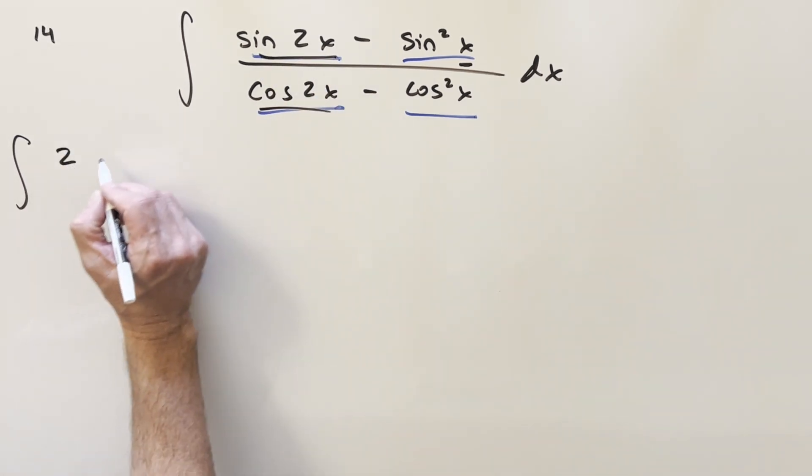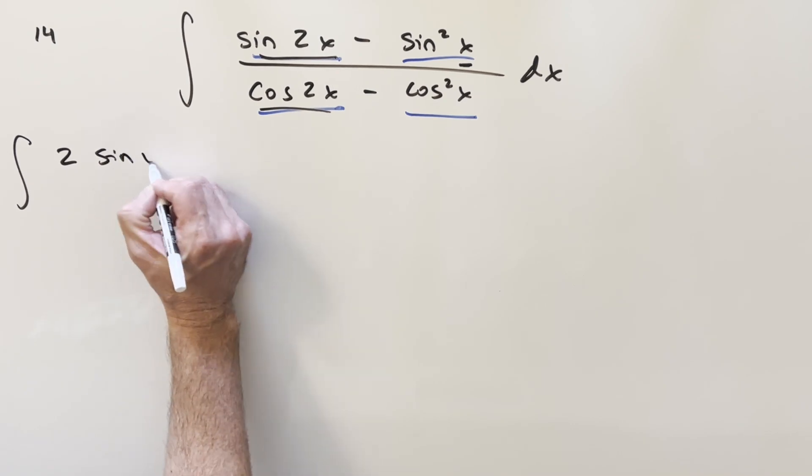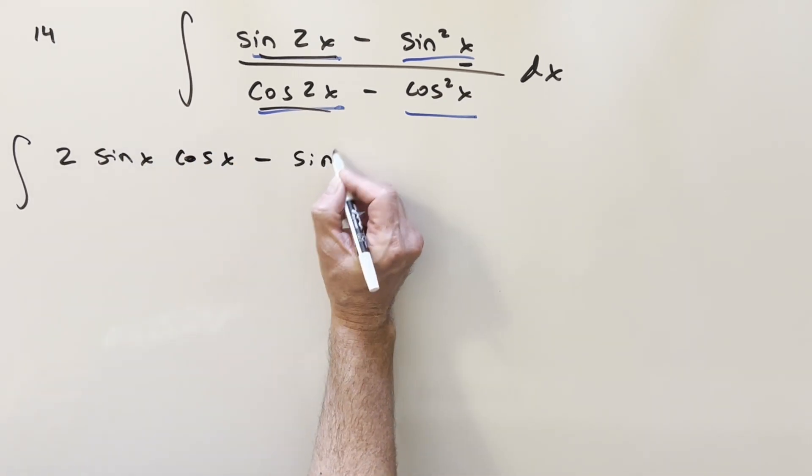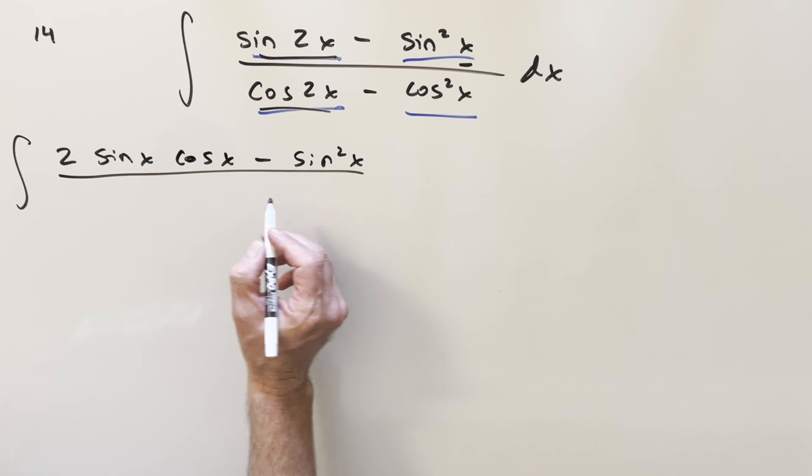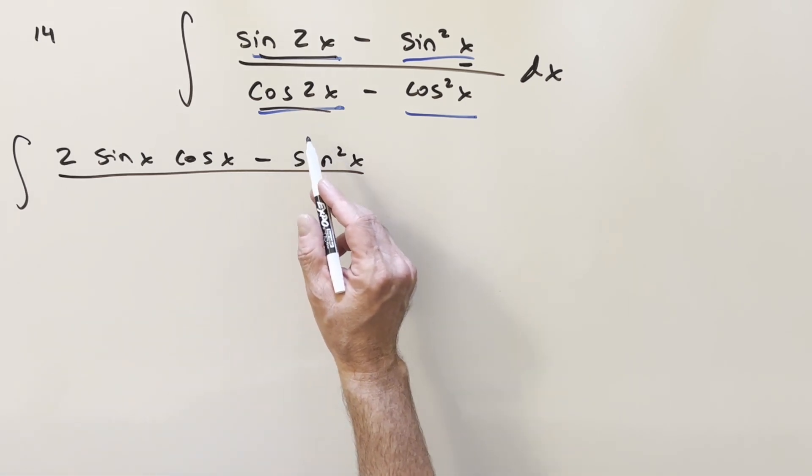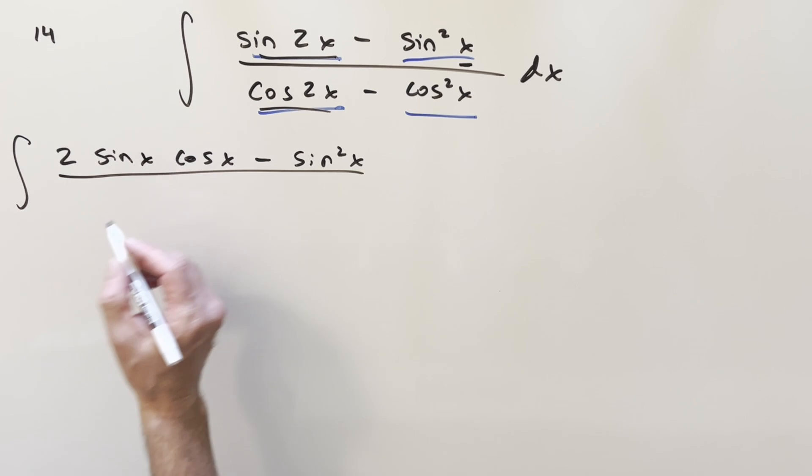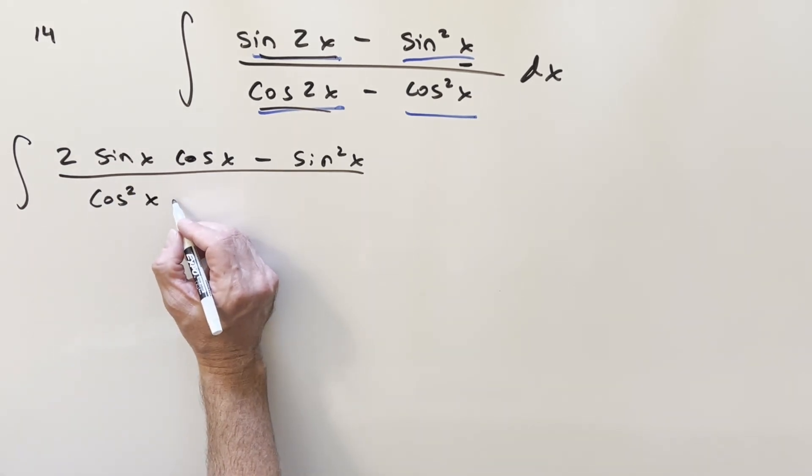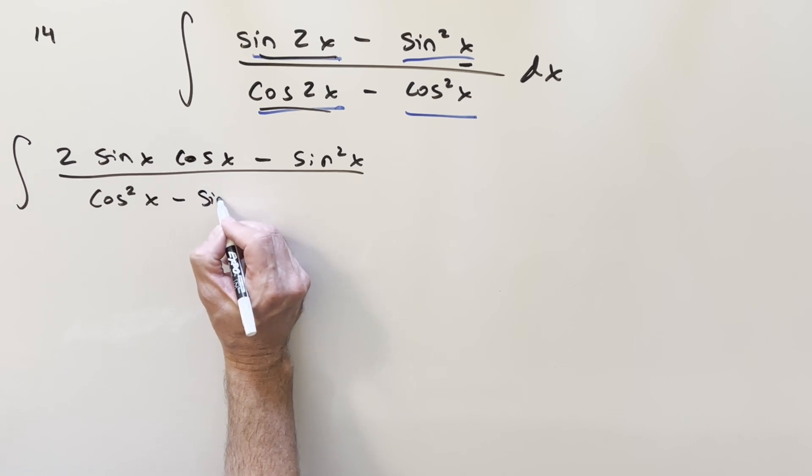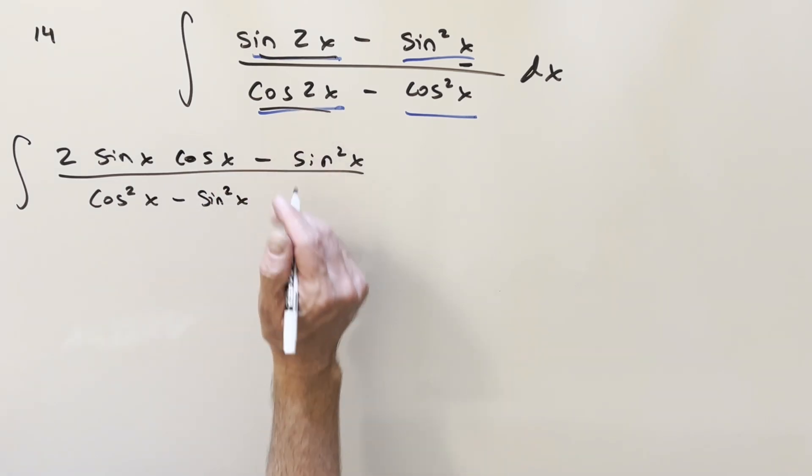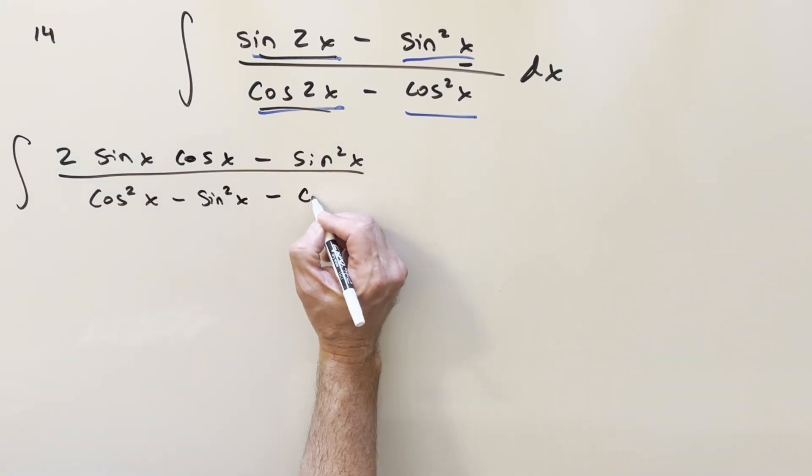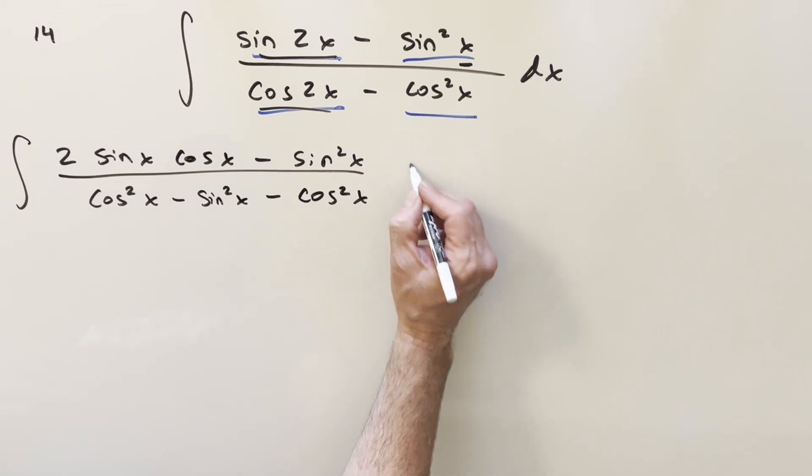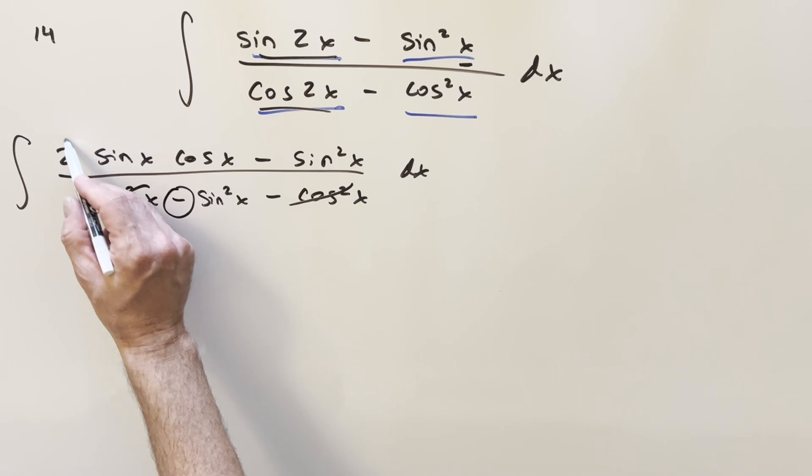So for sine 2x, I can write this as 2 sine x cos x. And then what we'll do next is we'll do the same thing on cosine. But there's three different versions of this double angle formula for cosine we can use. So what I'm going to do is I want to get some cancellation with this. I think what I'm going to do is let's do cosine squared x minus sine squared x for our double angle formula here. And then we have this minus cosine squared x.